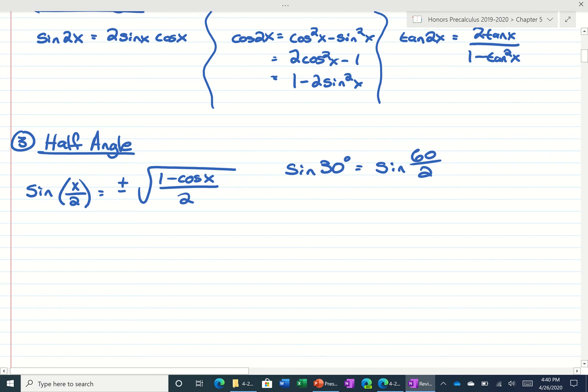When you're trying to figure out plus or minus, you want to look at what you're originally given. Like if I asked you sine of 30, 30 is in quadrant 1. And remember, all students take calculus.